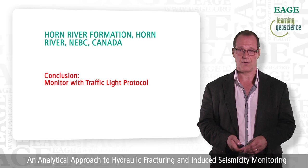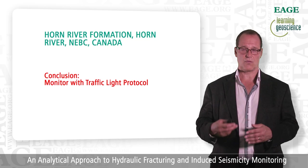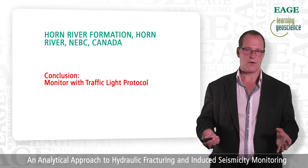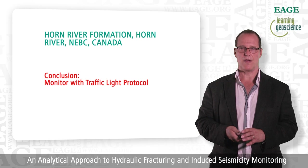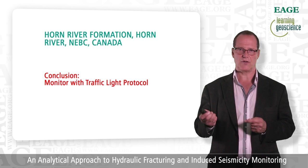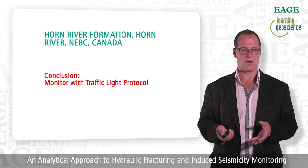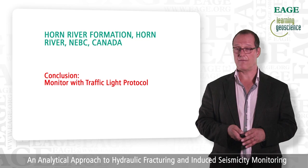What I mean by a traffic light protocol system: you should have staged responses for when you encounter higher magnitude events. When it's green, you're probably under MAG 2 — nothing critical is going to happen. Once you pass MAG 2, it goes to an orange state. Between MAG 2.2 and MAG 2.4, you need to identify with the government regulator what you're going to do if you exceed MAG 3 or 4. A red state — once you exceed MAG 4 — usually means shut down operations until you can inform the regulator how you'll prevent further magnitude events greater than 4.